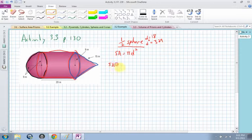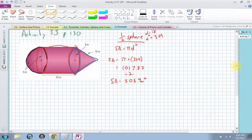So the surface area is equal to pi times 324. When I work that out, I get 1017.87. And because I'm only dealing with half a sphere, I have to divide that by 2. I divide it by 2, and I get that my surface area is equal to 508.9 meters squared. So that's the half sphere.